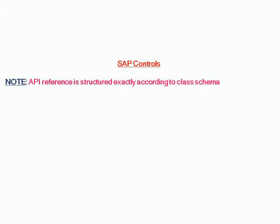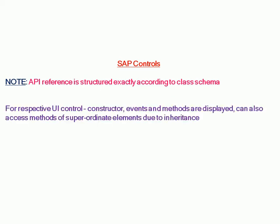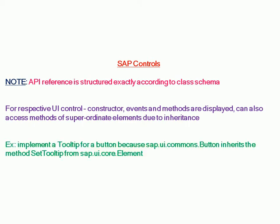Note: the API reference is structured exactly according to the class schema. For each respective UI control, the constructor, events, and methods are displayed. You can also access methods of superordinate elements due to inheritance. For example, implementing a tooltip for a button, because sap.ui.commons.button inherits the method setTooltip from sap.ui.core.element.